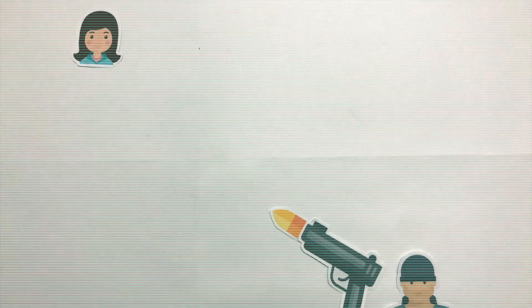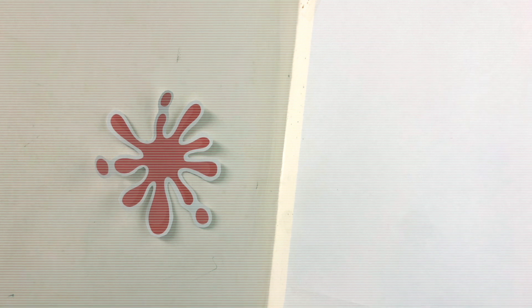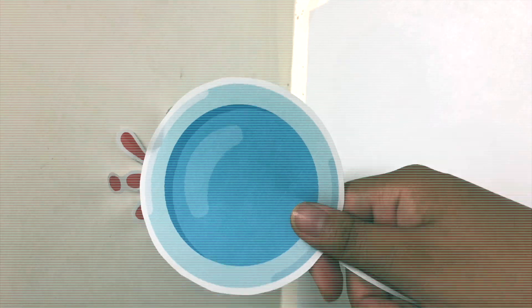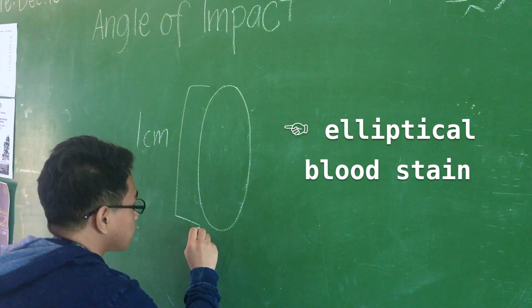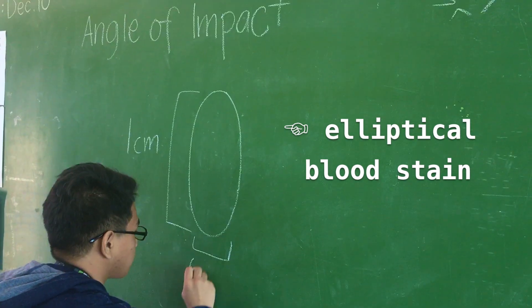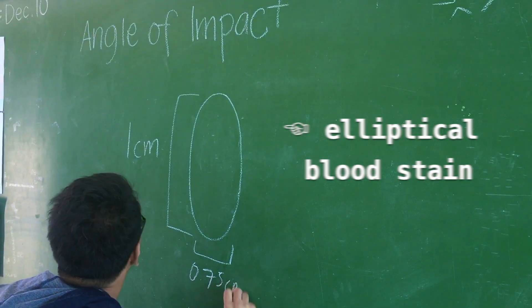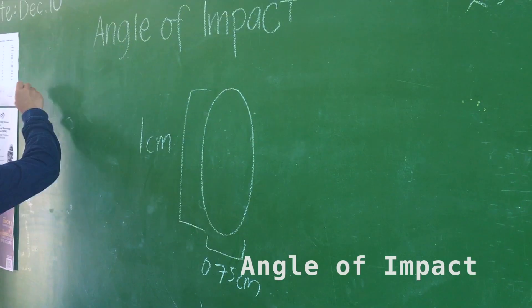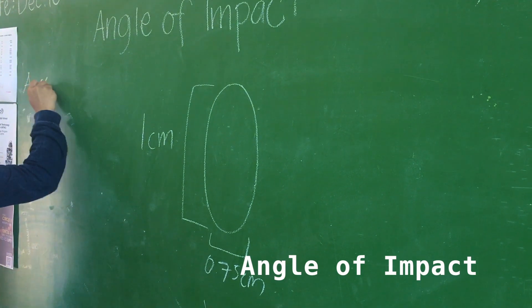For example, a woman was murdered in her house, and there were splatters of blood on the wall. When examined, one blood stain measured 0.75 cm in width and 1 cm in length. Using the mentioned formula, you can solve for the angle of impact.